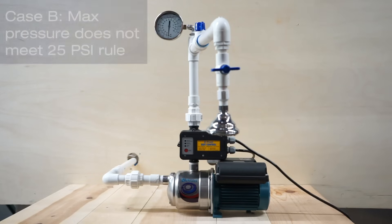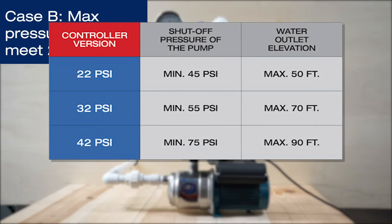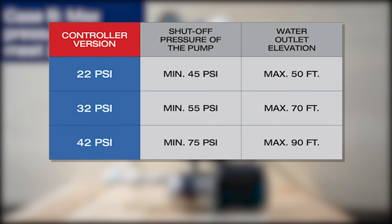In case B, when installing a best control controller on a pump, keep in mind the following. The difference between the shut-off pressure of the pump and the starting controller PSI setting must be at least 25 psi. This is known as the 25 psi rule.